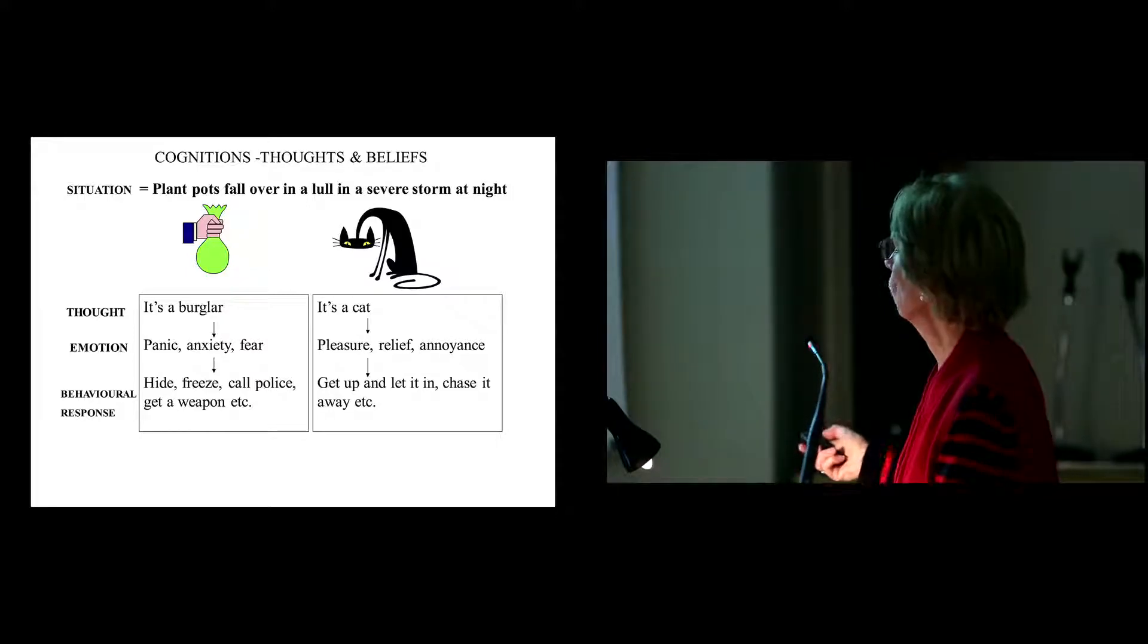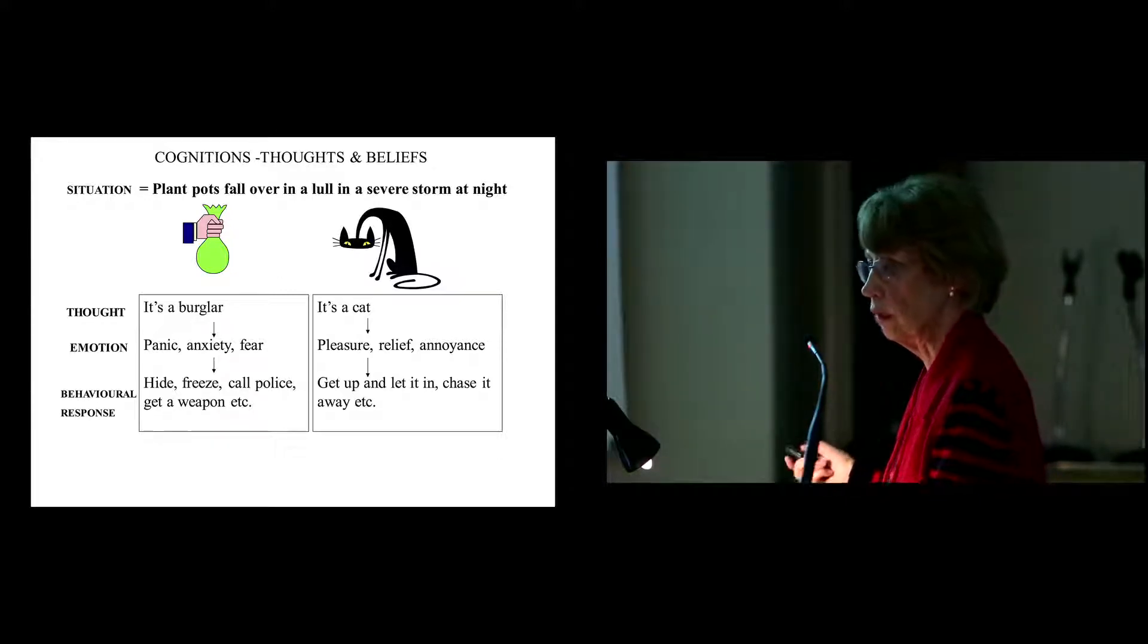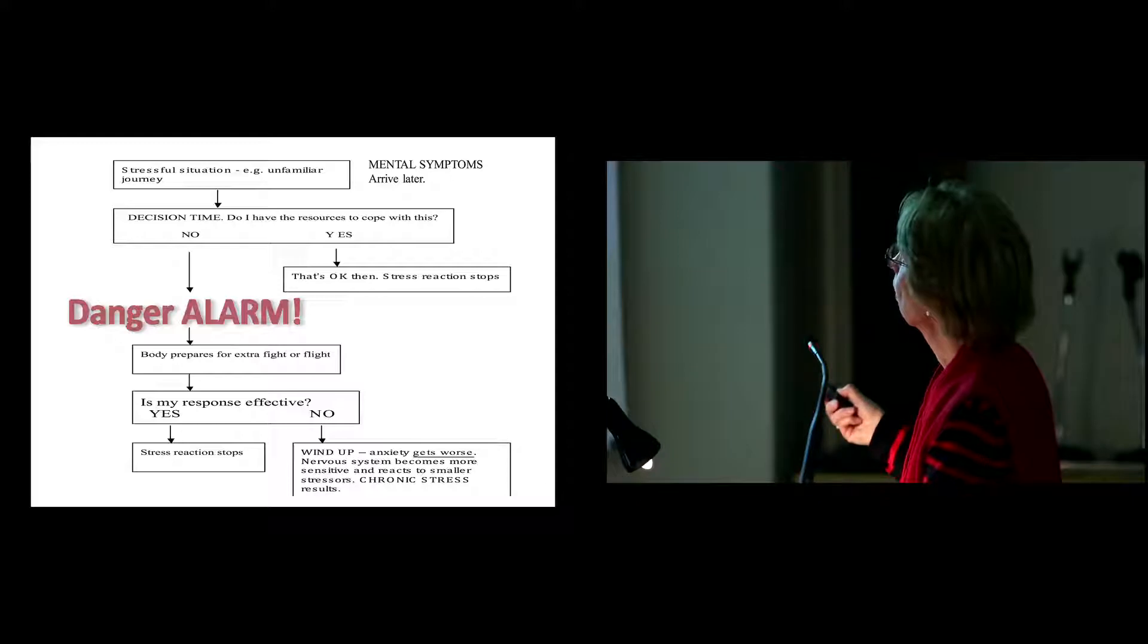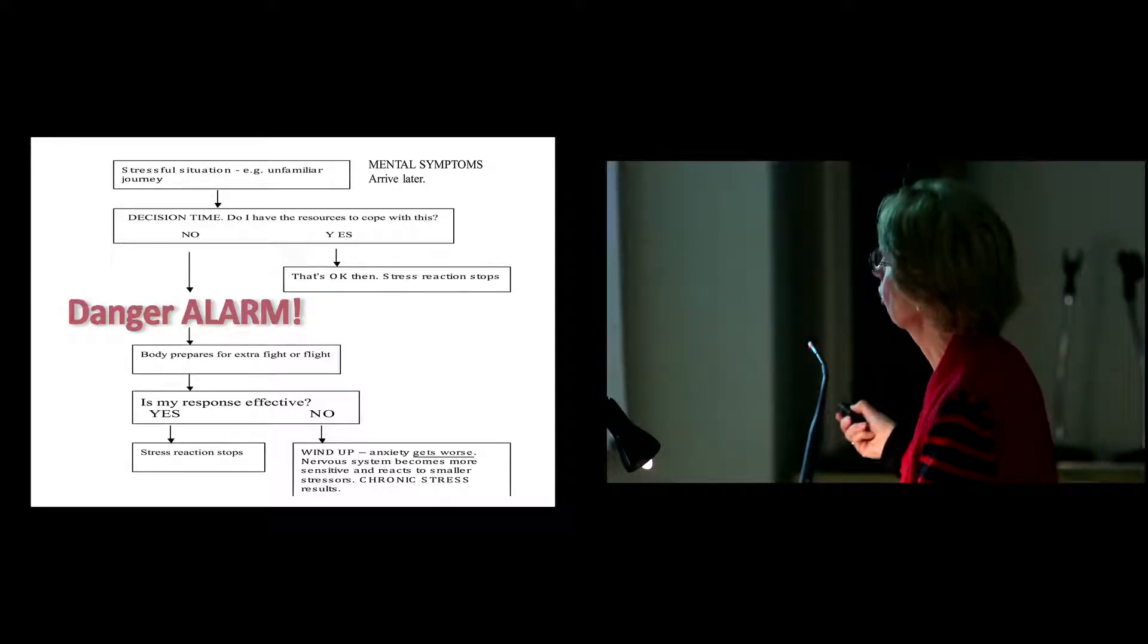You might interpret that as saying, well, it's a burglar. And then the emotion that follows from that would be your panic and anxiety and fear reaction. And your behavioural response to that will be whatever is relevant to your panic response. The whole thing forms a very logical sequence. However, if you interpret it that the plant pots falling over is due to your cat, then you might feel pleasure or relief. This is where the cognitive behaviour therapy bit comes in. How you interpret the event will enable you to have something to say about the physiological responses in your body.